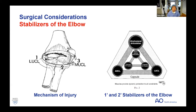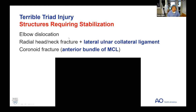Knowing the contributions of anatomic structures to stability is most important. In the classic figure of primary stabilizers — the ulnohumeral joint, anterior band of the MCL, and the LUCL — and secondary stabilizers: if a primary stabilizer is not competent, the secondary stabilizers become more important. Terrible triad injuries involve the LUCL and the coronoid as part of the ulnohumeral constraint as well as the anterior band of the MCL. My surgical plan here was a radial head arthroplasty — too comminuted to reconstruct — repair the LUCL, and fix the coronoid, thereby restoring stability to these primary stabilizers.